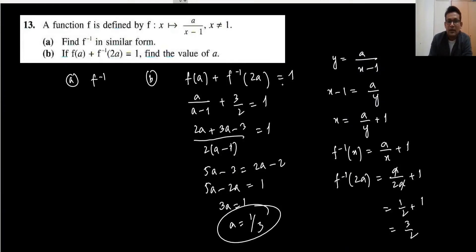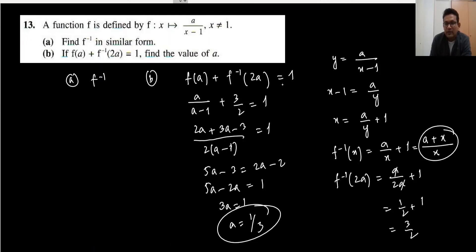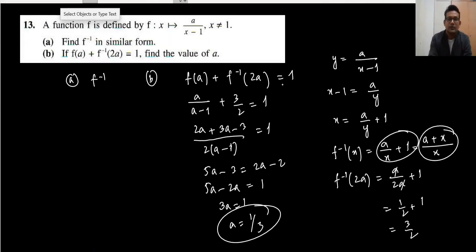In the book, they have taken the LCM approach and written it as (a+x)/(x) form — both approaches are equivalent. Moving to the next question.